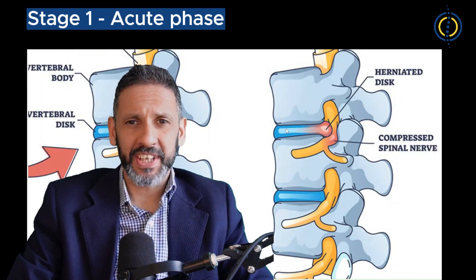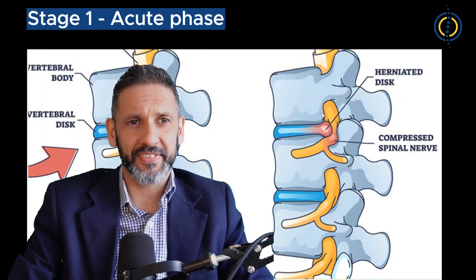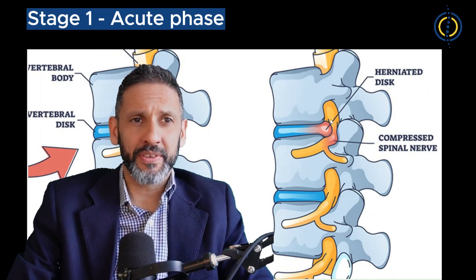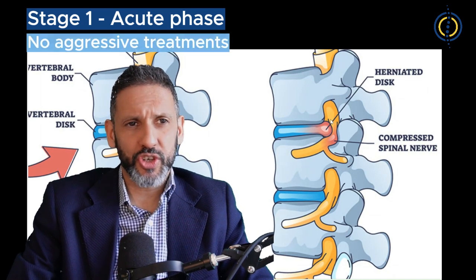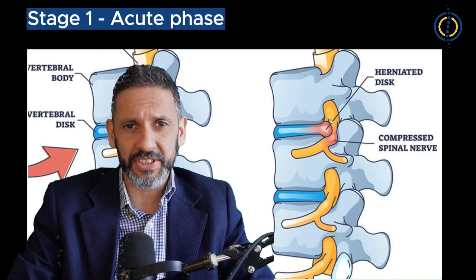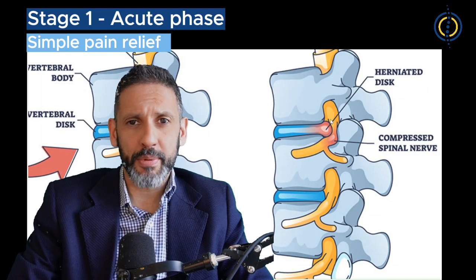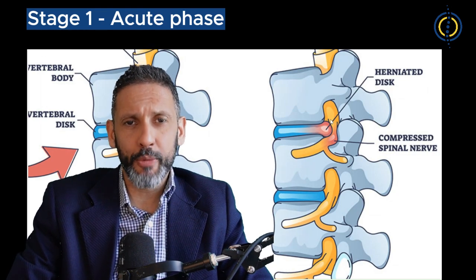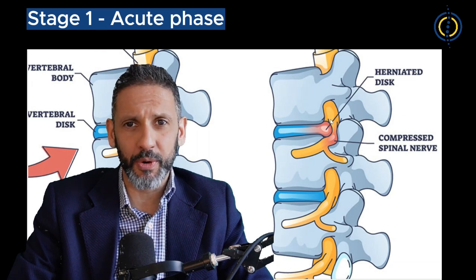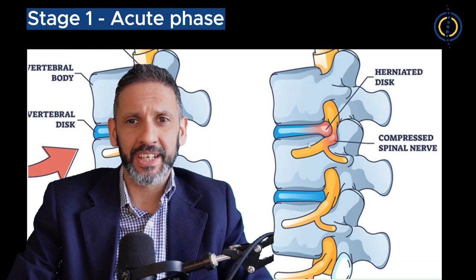Stage one is the acute phase. Everything in the region is very inflamed and the pain can be quite severe in that phase. What I usually advise patients to do in the first few days is not to have any aggressive treatments done — any manual therapy or any physiotherapy — because you simply won't be able to do the exercises or go through the manipulations with the therapist. I usually advise some simple painkillers: paracetamol, ibuprofen, or perhaps speak to your general practitioner about taking some opioid-based painkillers such as co-codamol, just to get over that first phase, as it usually starts to subside in that period.